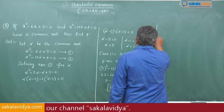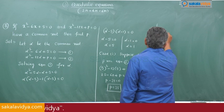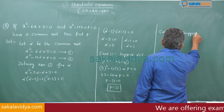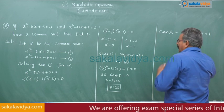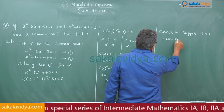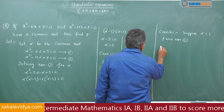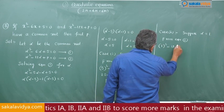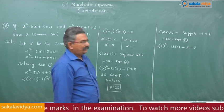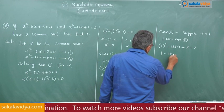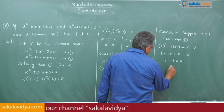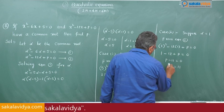Case 2: suppose alpha is equal to 1. From equation 2: 1 squared minus 12 into 1 plus p is equal to 0. So p minus 11 is equal to 0, therefore p is equal to 11. Hence p is equal to 11 or 35.